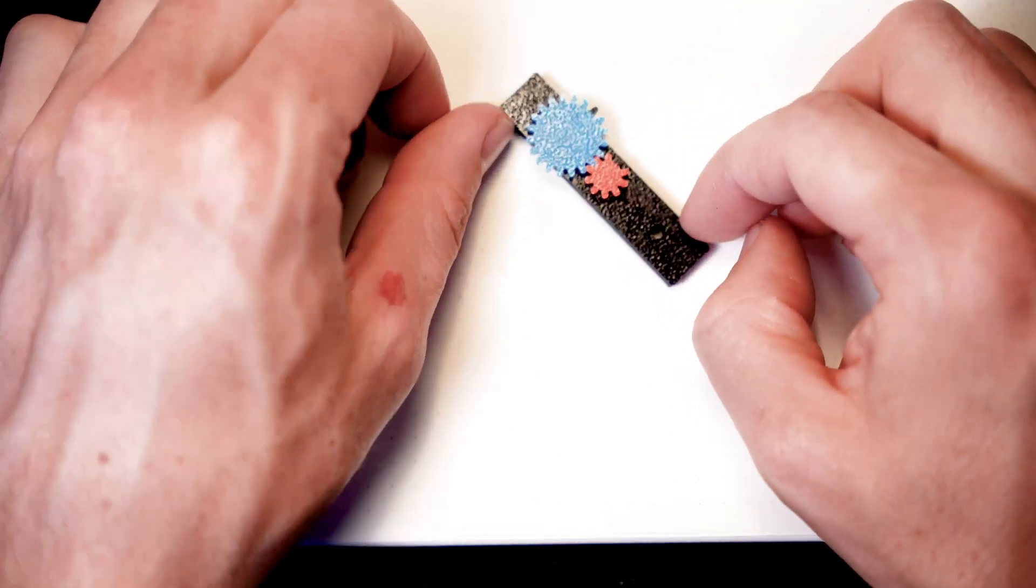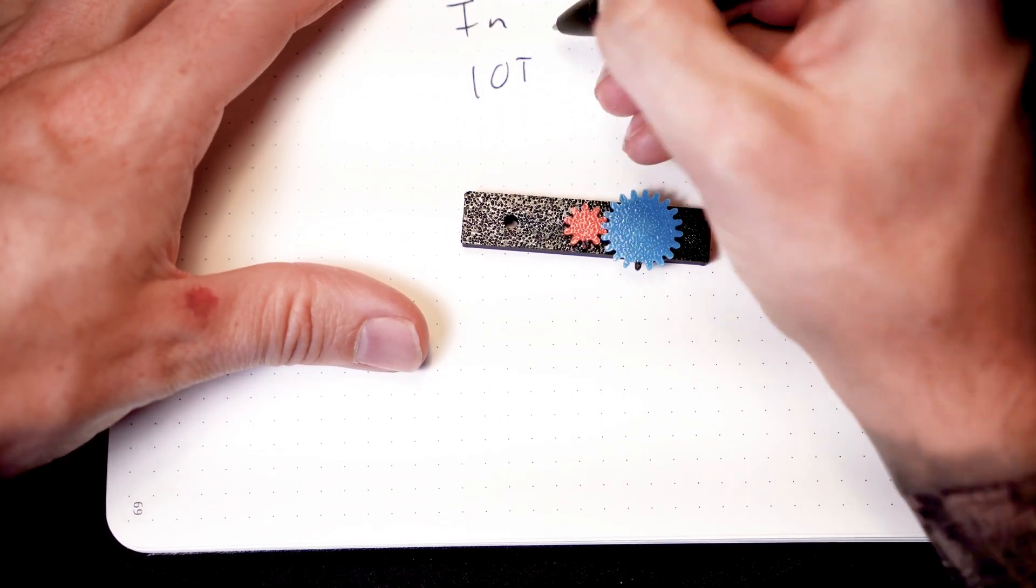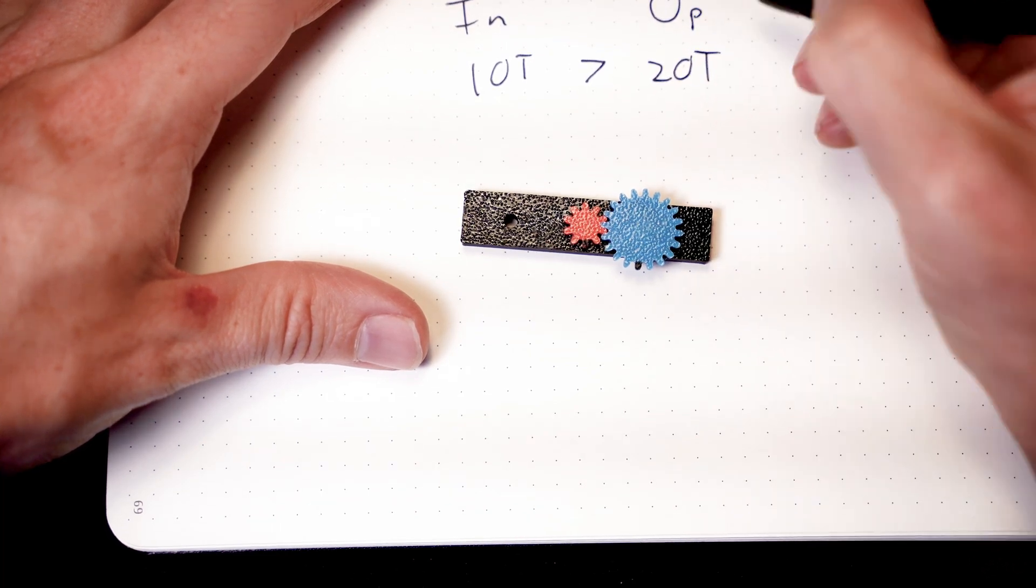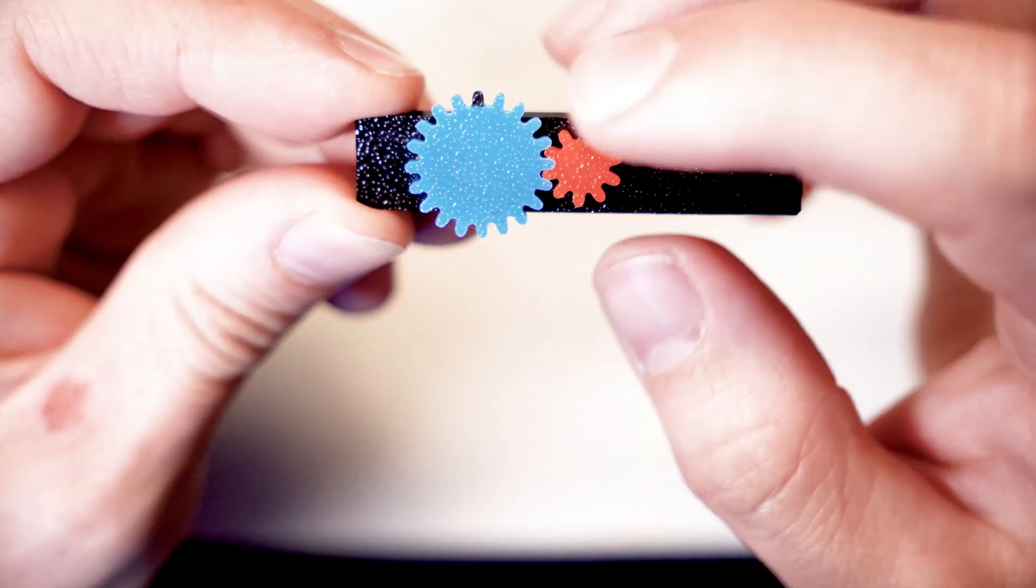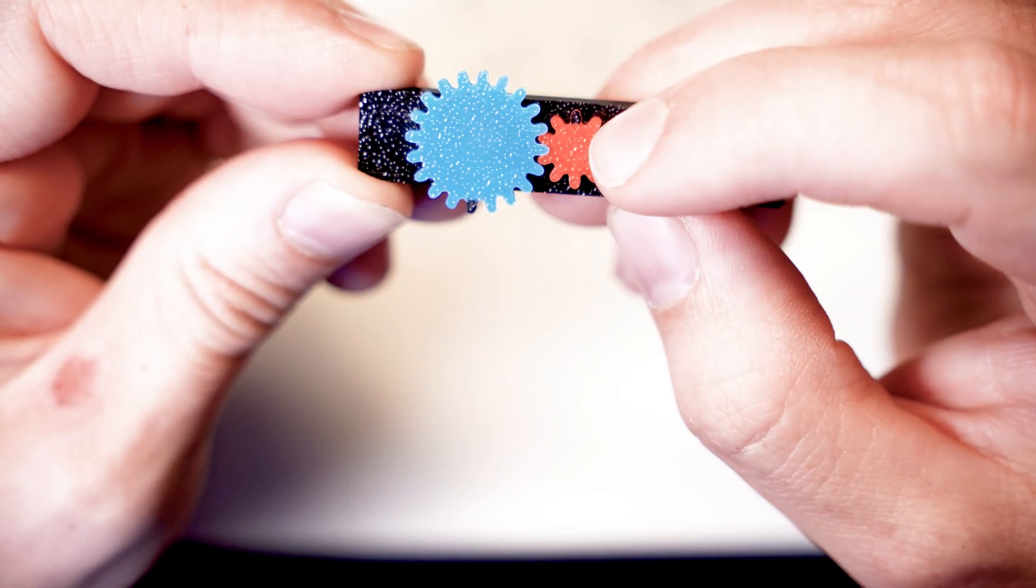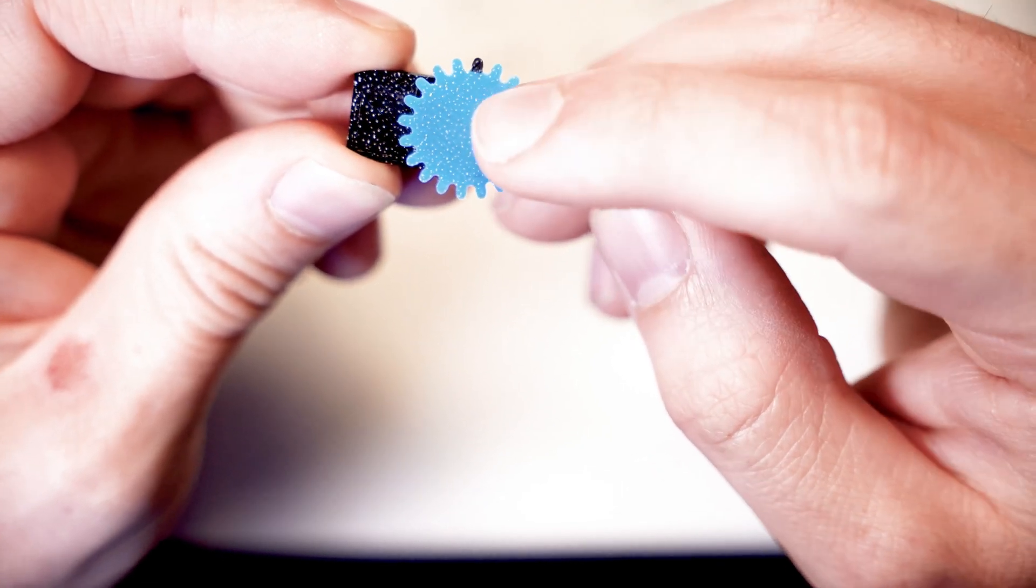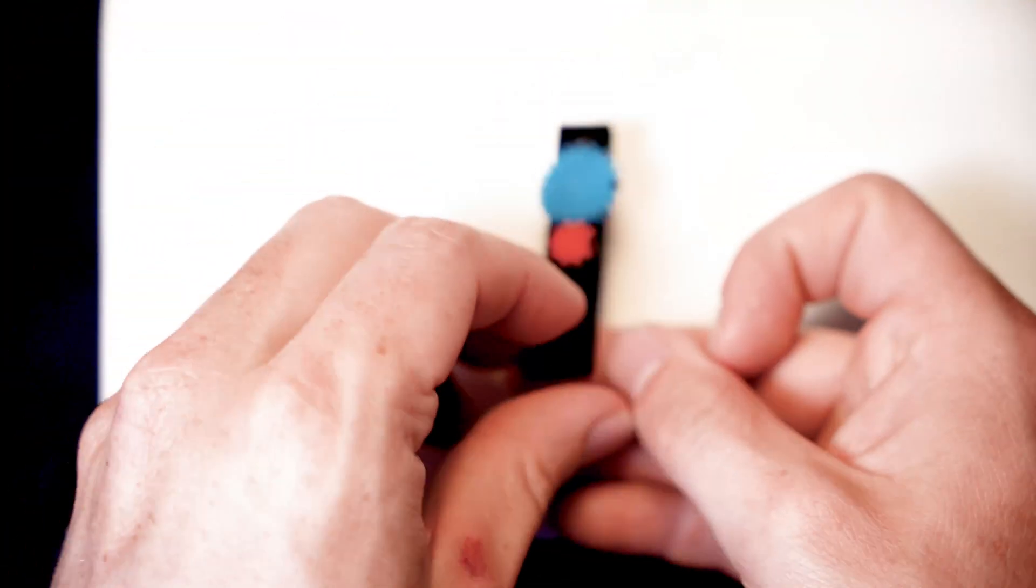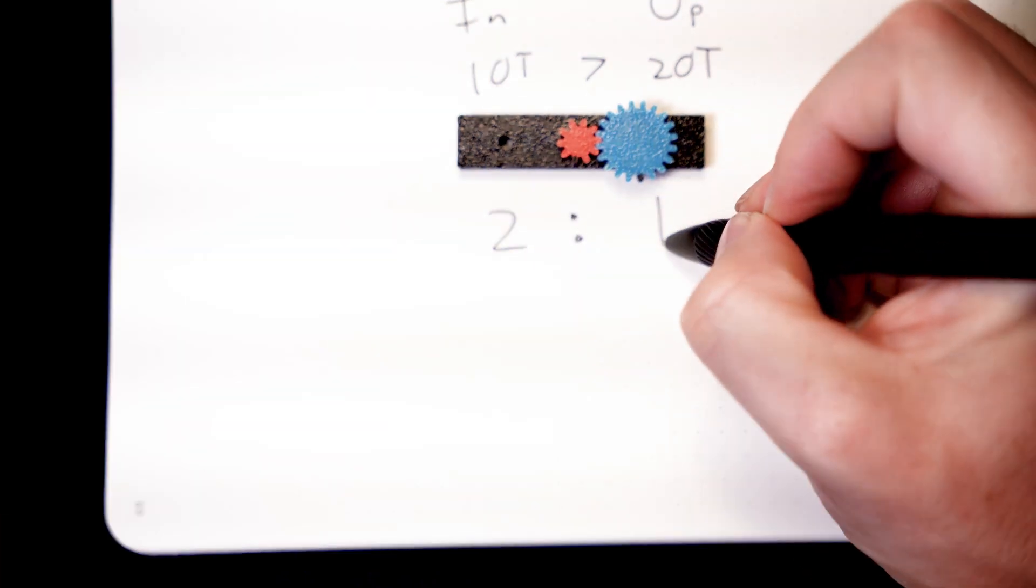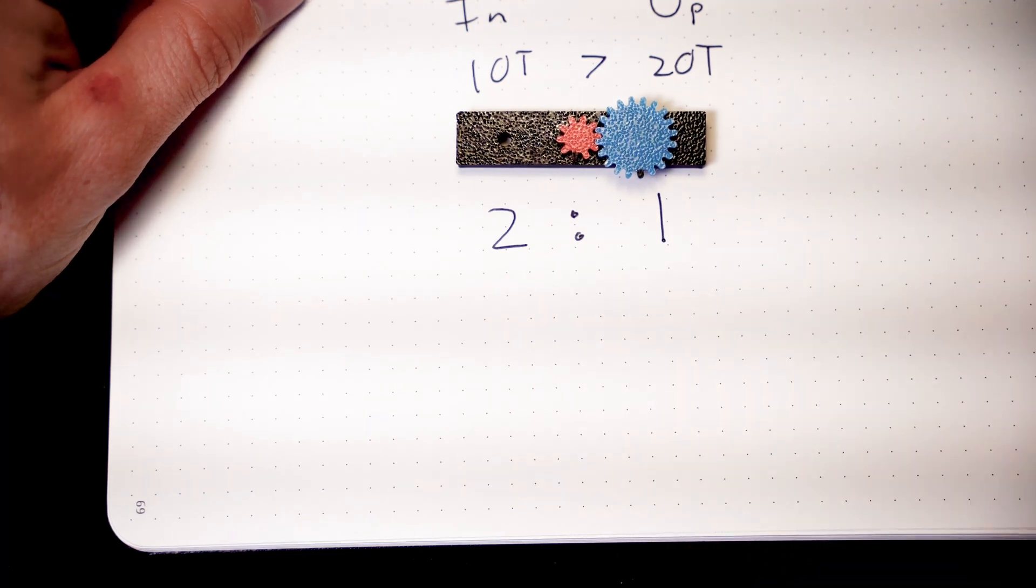So what happens if we take our gear ratio and we flip it around? So now we're going to input a 10 tooth gear and we're going to output a 20 tooth gear. With both of them at the top, this time let's rotate the red gear and let's count how many times the blue gear rotates around. We should know that it's still going to be one rotation. And as I complete another full rotation on red here, we get one full rotation on blue. So in this case, for every two rotations of our input gear, we get one output rotation of our output gear or a two to one ratio.